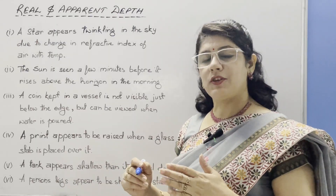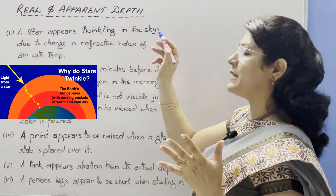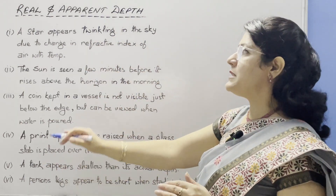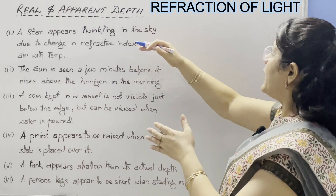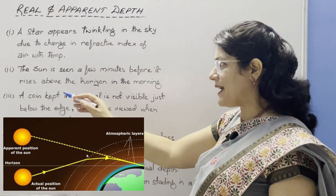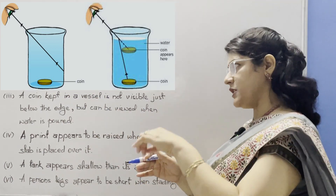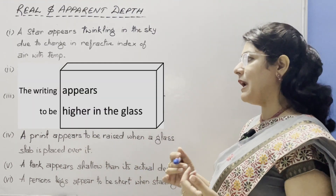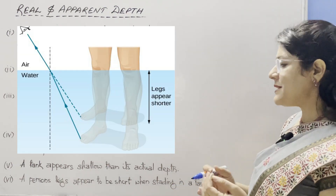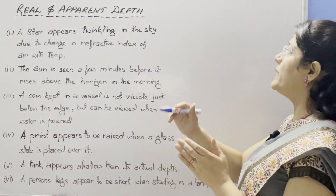Now we are going to discuss some consequences of refraction of light. First, a star appears twinkling in the sky due to change in refractive index of air with temperature. Second, the sun is seen a few minutes before it rises above the horizon in the morning. Third, a coin kept in a vessel is not visible just below the edge but can be viewed when water is poured into it. Fourth, a print appears to be raised when a glass slab is placed over it. Fifth, a tank appears shallow — at less depth than its actual depth — and a person's legs appear shorter when standing in a tank. All these consequences are related with refraction of light; you will get one mark in your examination by writing just 'refraction of light.'